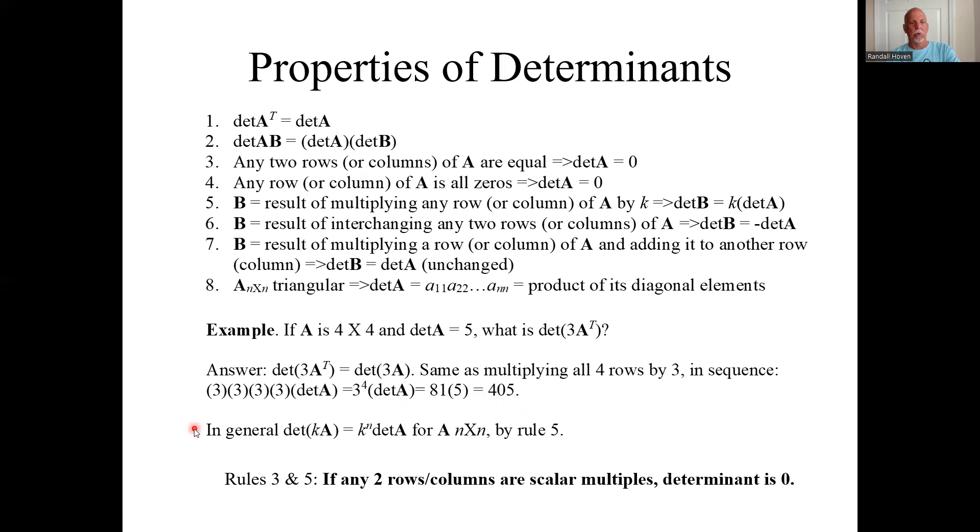In general, you could write this as sort of your ninth rule, so it's the result of rule five. If you multiply the whole determinant by k, it's an n by n determinant, k to the n times the determinant of the original matrix.